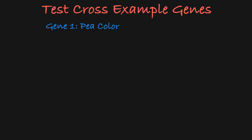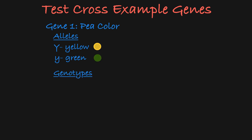The first gene we will look at confers pea color. This gene has two alleles: a dominant allele that results in a yellow pea color and a recessive allele that results in a green pea color. So the homozygous dominant and heterozygous genotypes result in yellow peas, and the homozygous recessive genotype results in green peas.